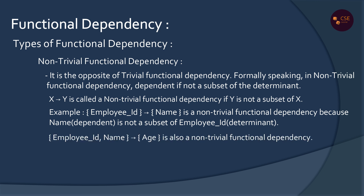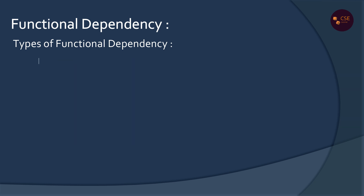Employee ID, Name determines Age — this is a Non-Trivial Functional Dependency because Age on the right side is not present on the left side determinant. So it is a Non-Trivial Functional Dependency. The second type is Multi-Value Functional Dependency.